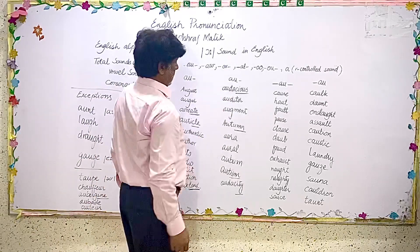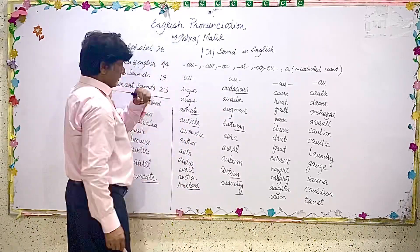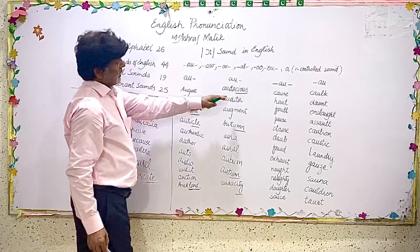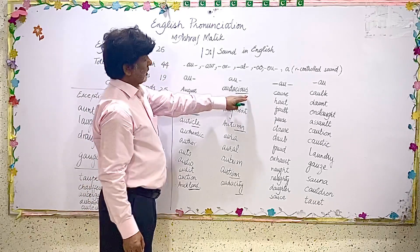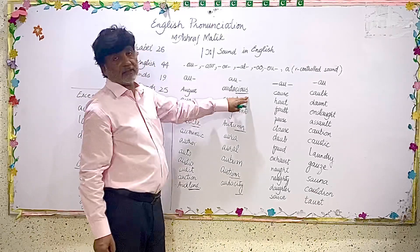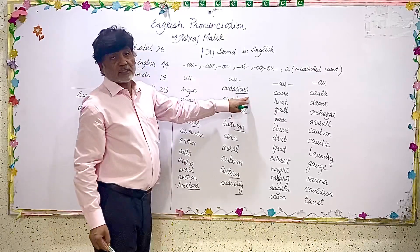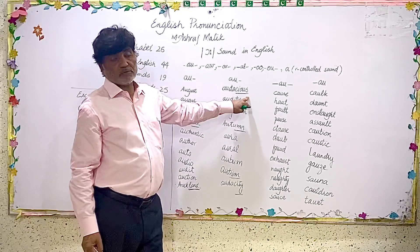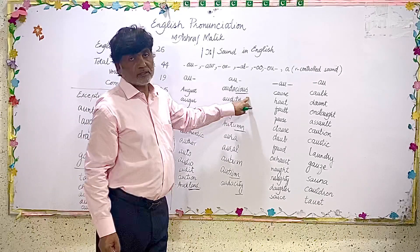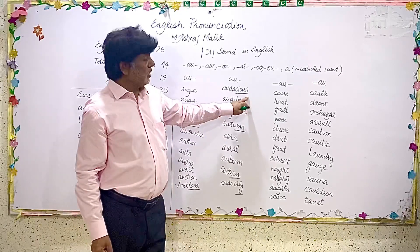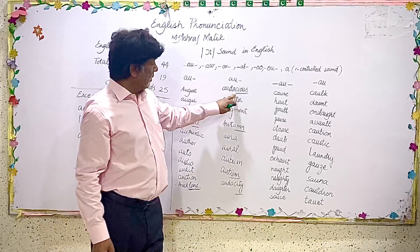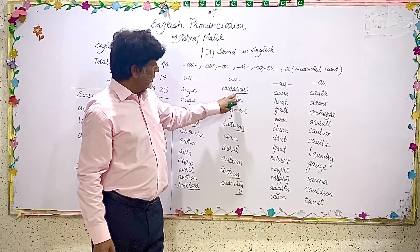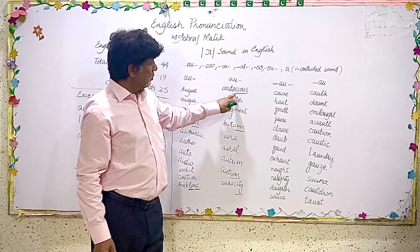Audacious — C-I-O-U-S. You can see that -CIOUS is underlined. When -CIOUS comes as a suffix at the end of a word, it gives us the sound -SHAS, not -SIOUS.